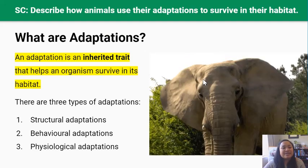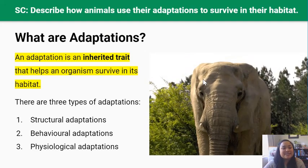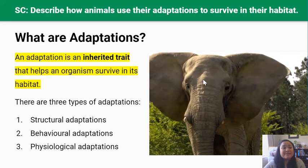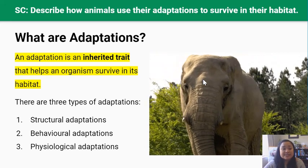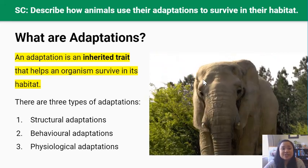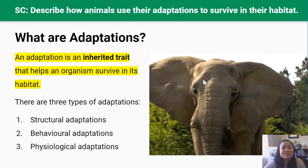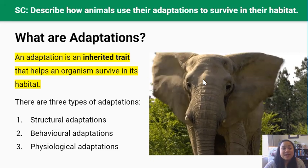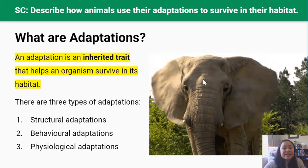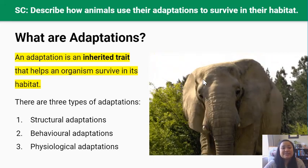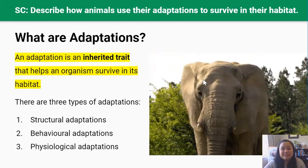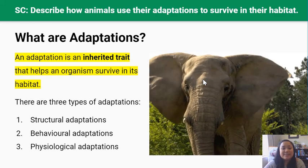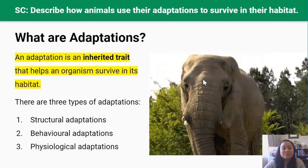Living things are adapted to their habitats. This means that they have special traits or features that help them to survive. For example, an African elephant lives in a hot habitat so it has very large ears that it flaps to keep it cool.